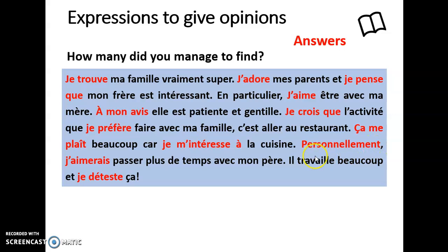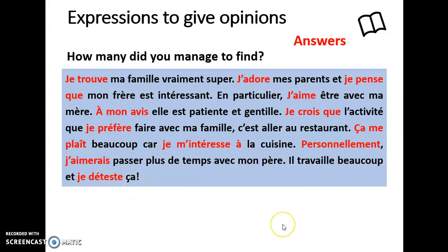'Personnellement' — personally. 'J'aimerais' — now, you would recognise 'je voudrais' from the last couple of years, meaning 'I would like'. Here's another way of saying 'I would like' — it looks like 'j'aime' but the ending makes it 'I would like'. 'Passer plus de temps avec mon père' — I would like to spend more time with my dad. 'Il travaille beaucoup' — false friend alert: 'travailler' means to work, not to travel. He works a lot. 'Et je déteste ça' — I hate that. So, most of that text you might have already known. Well done.